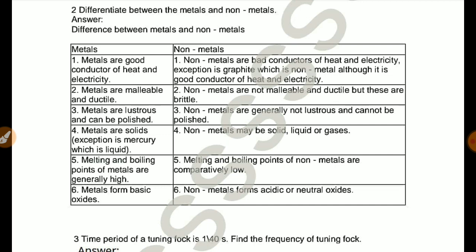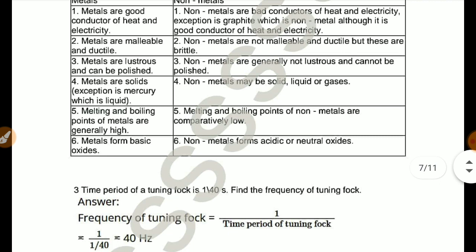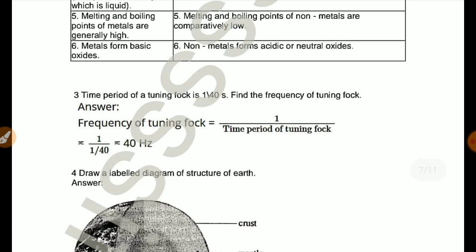Melting and boiling point of metals are generally high. Melting and boiling point of non-metals are comparatively low. Metals form basic oxides, non-metals form acidic or neutral oxides. Time period of tuning fork is 1 by 40 second, find the frequency. The frequency equals one by time period, one by one by forty equals 40 hertz.